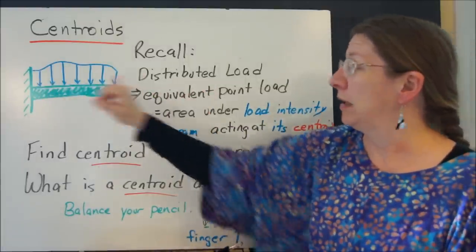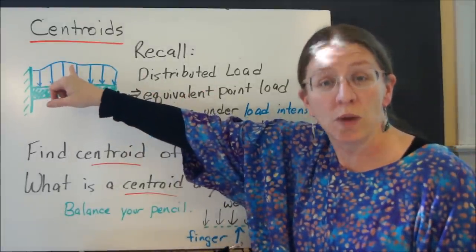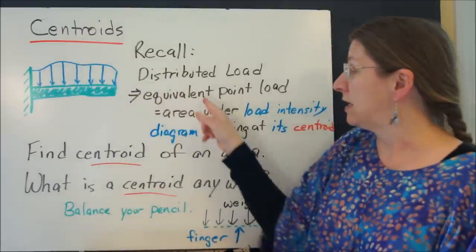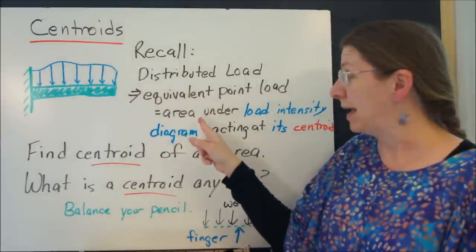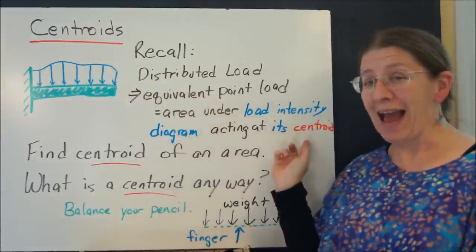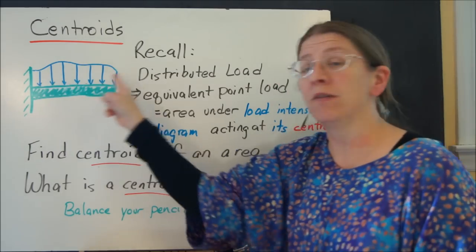Recall the equivalent point load. We want to take that distributed load and make an equivalent point load. It's going to be the area under the curve as its magnitude, and it's going to act at the centroid of this blue shape.